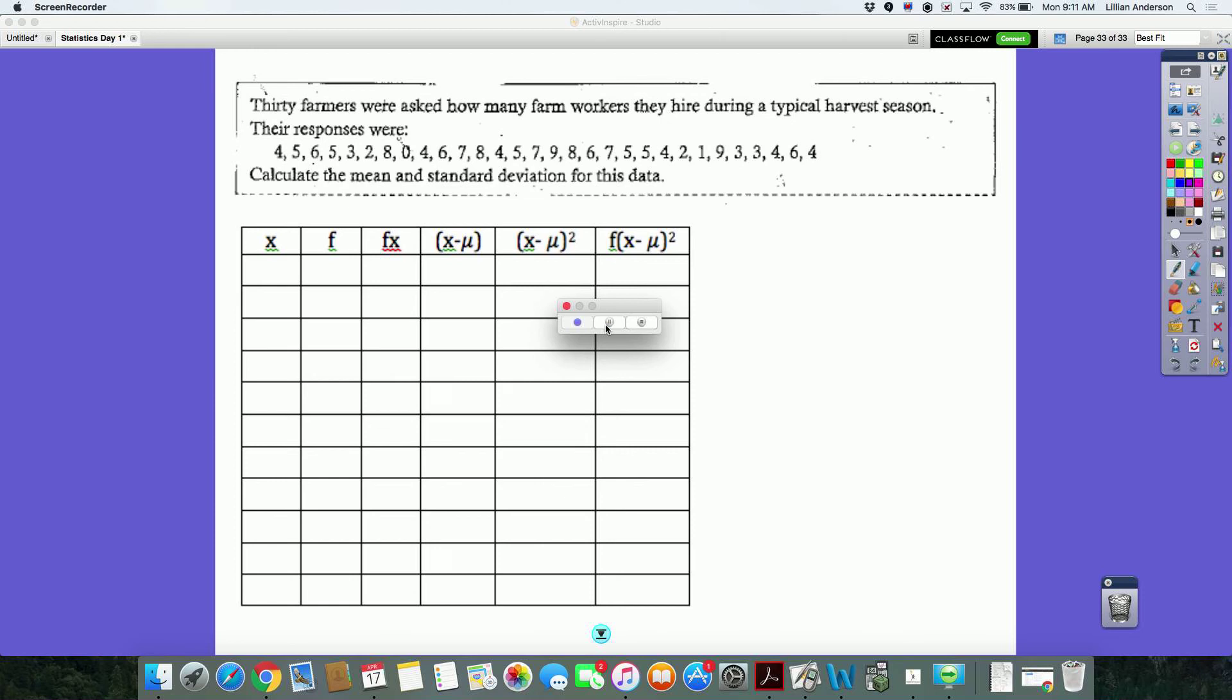We're going to do this example where we have 30 farmers were asked how many farm workers they hired during a typical harvest season. This is going to say to calculate the mean and the standard deviation for this data. We are going to do this by hand first, because if you plan to do anything statistics related for your IA, you need to know how to do this by hand. But I will show you how to do it in a calculator, because that's what's going to be needed for tests.